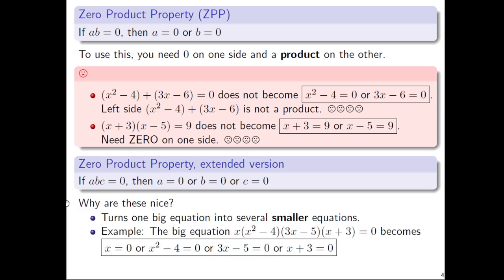So for example, the big equation x(x² - 4)(3x - 5)(x + 3) = 0. Look, I said times many times on the left side and there's a 0 on the right side. So this is like an extended extended zero product property, but each of the factors on the left is set equal to 0. So x = 0 or x² - 4 = 0 or 3x - 5 = 0 or x + 3 = 0.